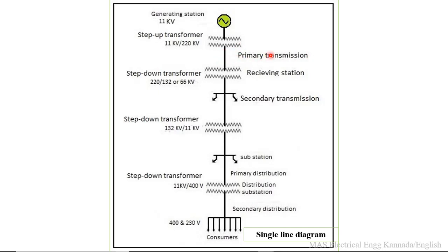Next, this 220 KV cannot be utilized or given to loads directly. That is why we need to step down to 132 or 66 KV at the receiving station. That 66 KV is given to secondary transmission lines.